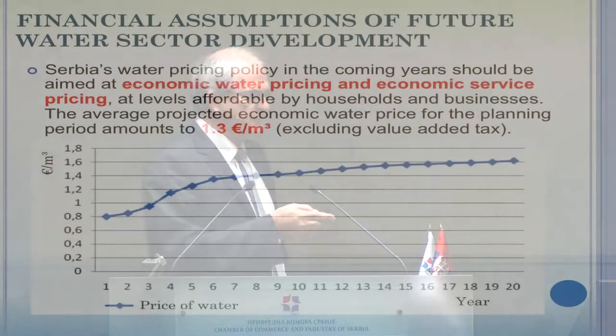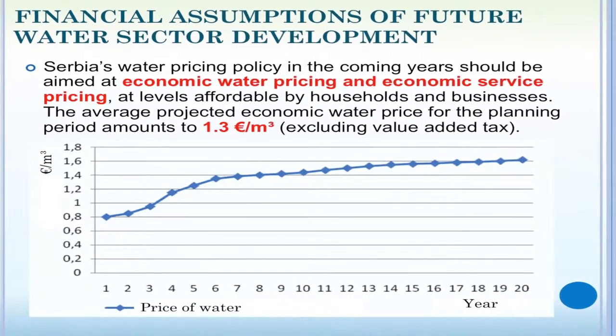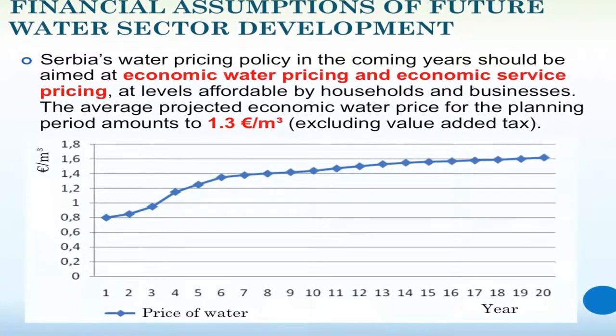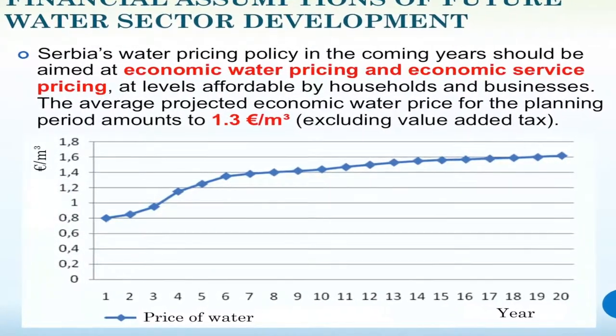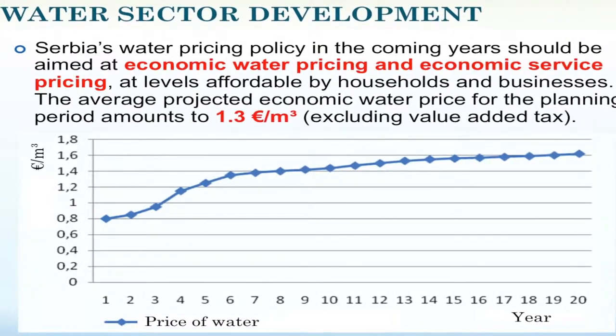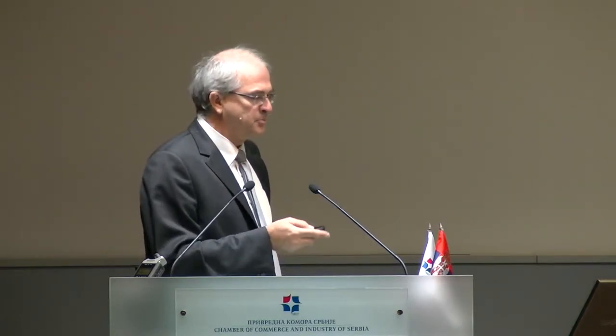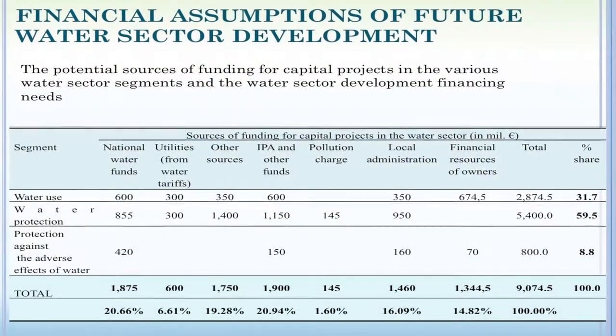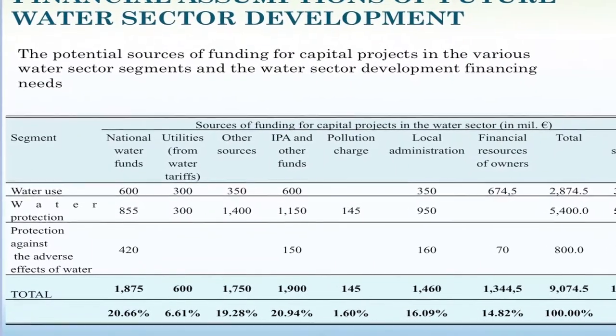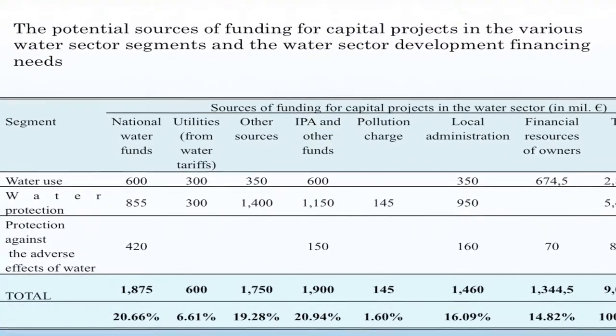The current tariff is 0.6 euros per cubic meter for domestic use and about 1 euro per cubic meter for industrial use. We need to increase to about 1.6 euros per cubic meter at the end — giving an average of about 1.3 euros per cubic meter — which by our opinion is needed to meet requirements over the next 20 to 25 years. Our projections show that we rely both on national funding and on international financial institutions, as well as EU accession funds, IPA funds, and other funds to carry out this investment.